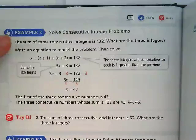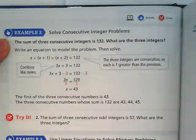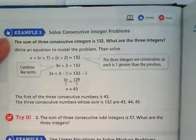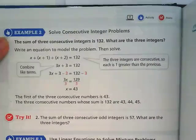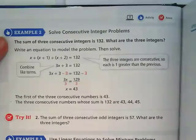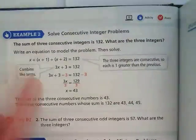You guys look at this with me. The sum of three consecutive integers is 132. What are the three integers is the question. But before we can move on, we have to understand what that sentence is even saying. So let's pick it apart.